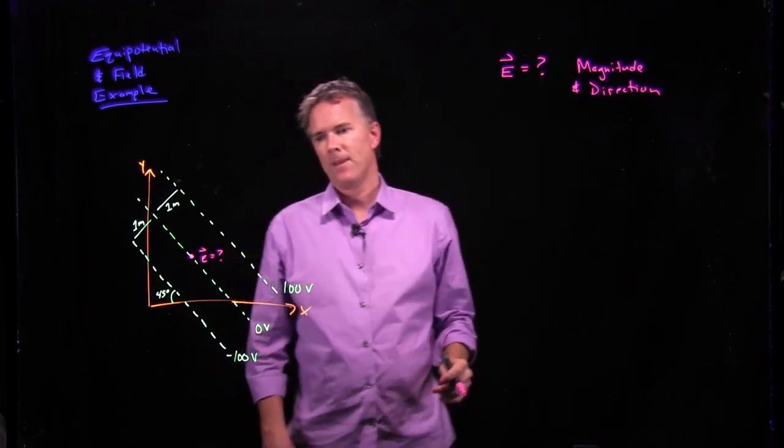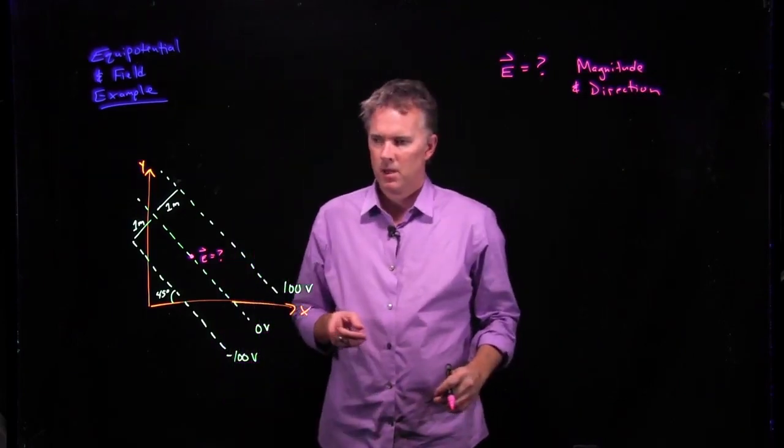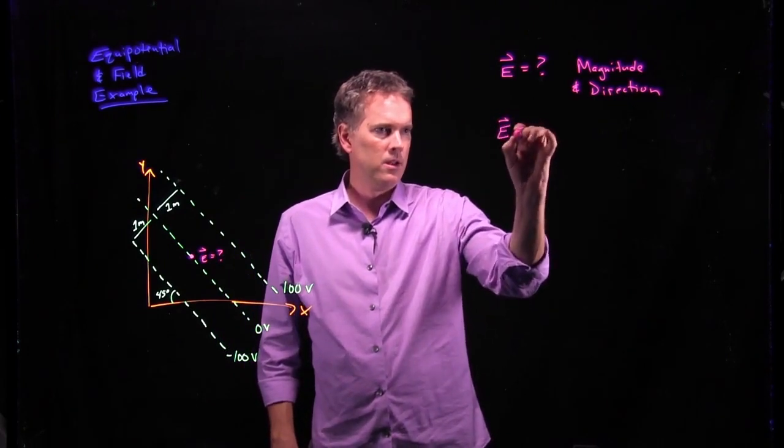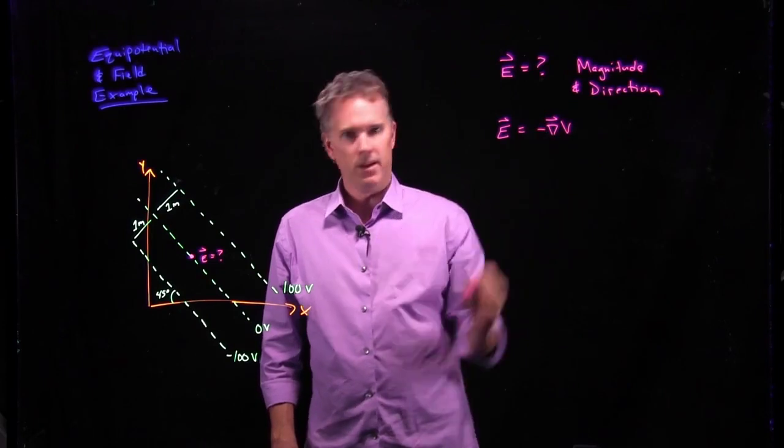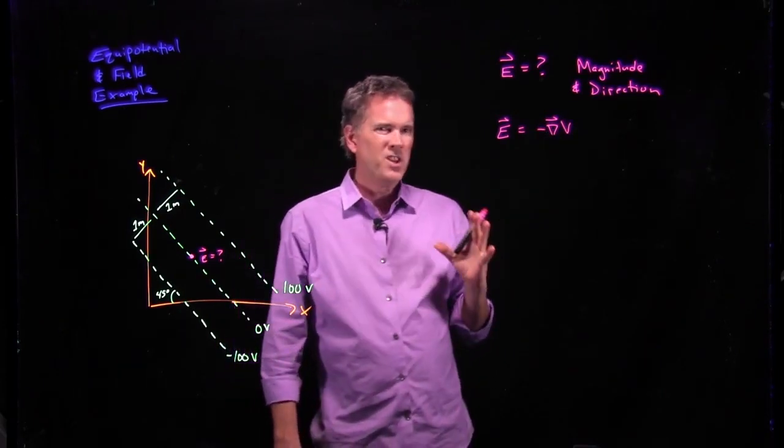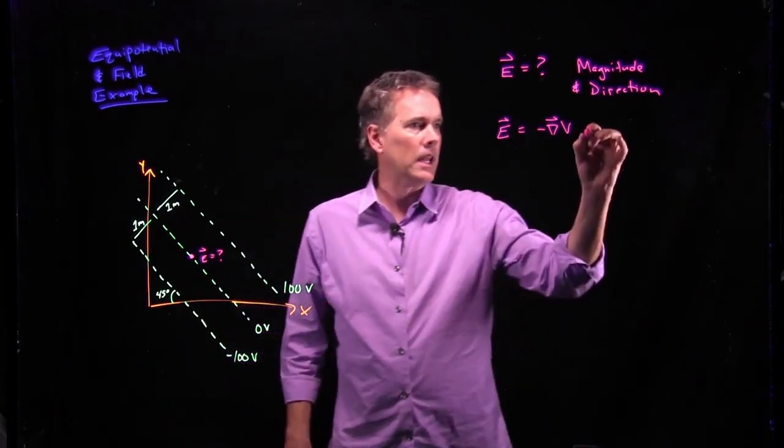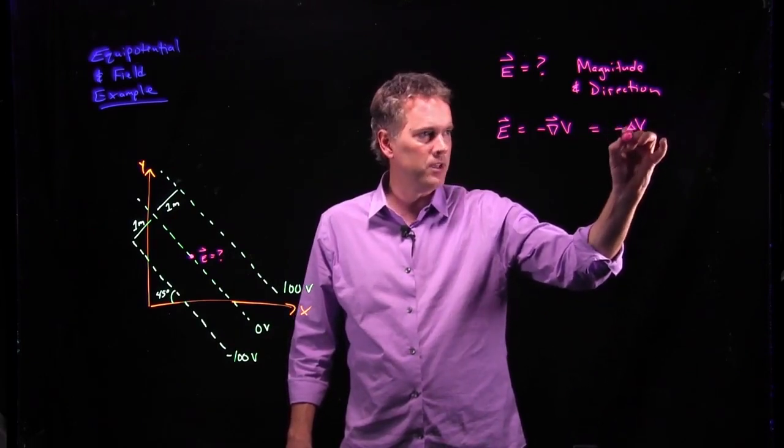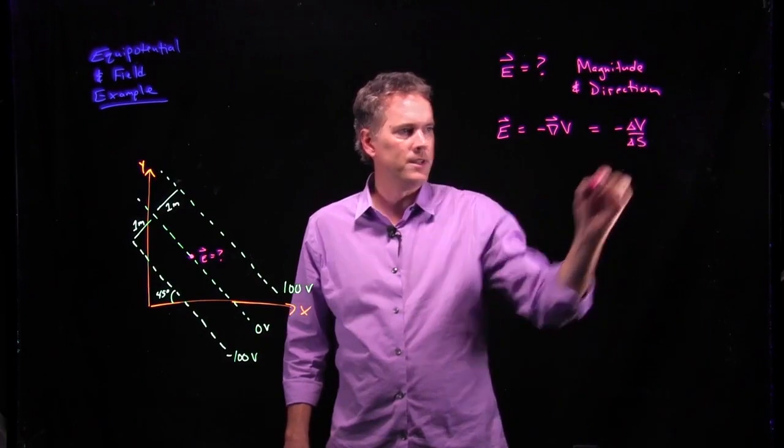Let's think about this. We know that the E field is negative del V, which is really kind of like negative delta V over delta s, right?